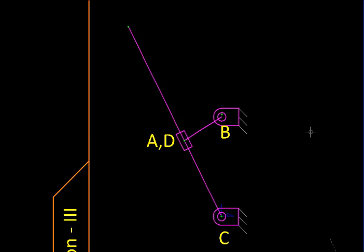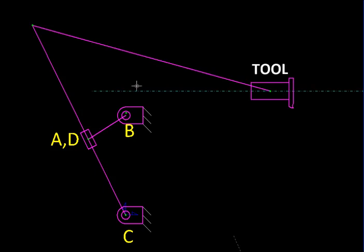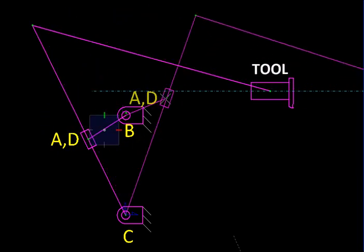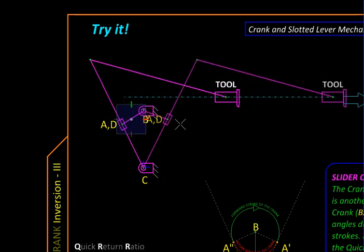Next we are going to make this mechanism a little more useful by adding a few links like this. Here we have added a link. At the end of it we have fixed a tool which is constrained to reciprocate along this horizontal path. Now as the mechanism moves, the tool goes back and forth, so it reciprocates.